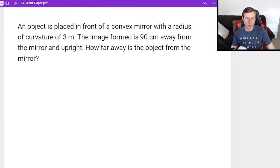Okay, here's the next one. An object is placed in front of a convex mirror with a radius of curvature of three meters. The image formed is 90 centimeters away from the mirror and upright. How far away is the object from the mirror?